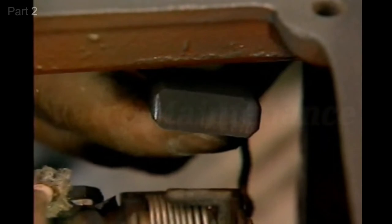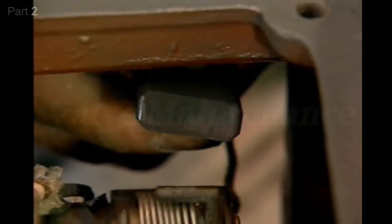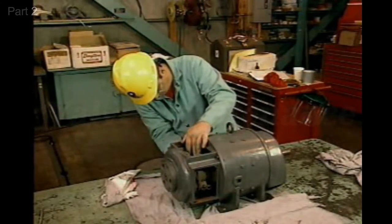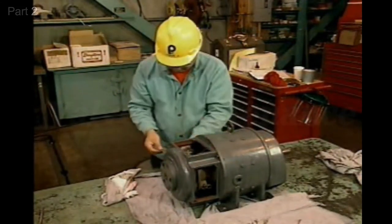If it doesn't, the procedure with the flint paper is repeated. When the shape of all of the brushes conforms to the shape of the commutator, the seating procedure is complete.